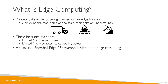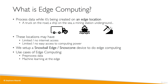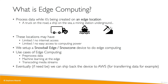To do edge computing, you can order a Snowball Edge device or a Snowcone and have it embedded into these edge locations. Use cases include pre-processing data, doing machine learning at the edge without going back to the cloud, transcoding media streams in advance, and eventually shipping back the device to AWS if you need to transfer data. You start processing data very close to where it's being created, and then ship it back to AWS.